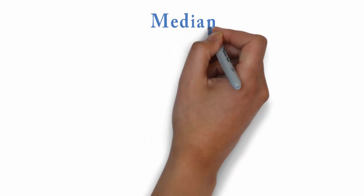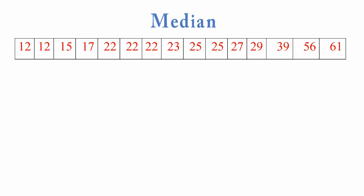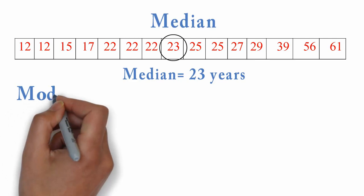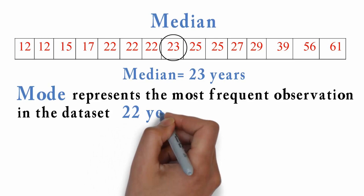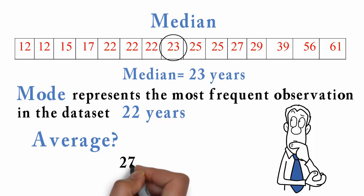The median is the middle value when the data is arranged in ascending or descending order. In our example, this gives us the median of 23 years. The mode represents the most frequent observation in the data set, in this case 22 years. So think about how you present an average. As we can see here, it can be 27, 23 or 22 years.